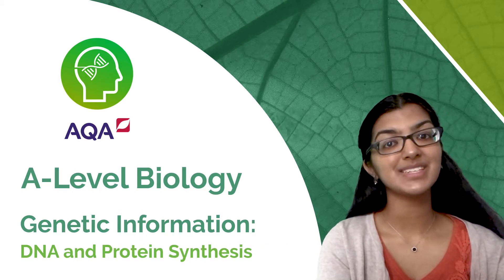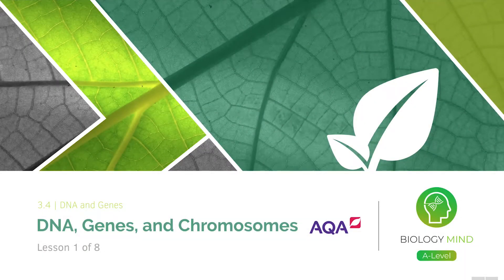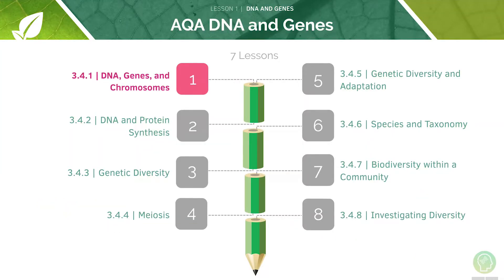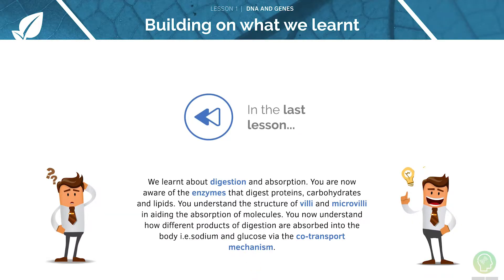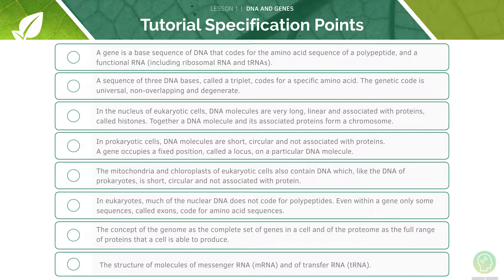We also have helpful timestamps to guide you through the specification. Welcome to lesson one of eight in this tutorial, covering DNA, genes and chromosomes. This is the first video in our series of eight lessons on the topic of DNA and genes. Here are the key learning objectives for today's lesson: to look at DNA and genes, then at chromosomes and alleles, the anatomy of a gene, and finally the functions of RNA. Here are the AQA specification points for today's lesson — feel free to pause the video and read through them before we begin.